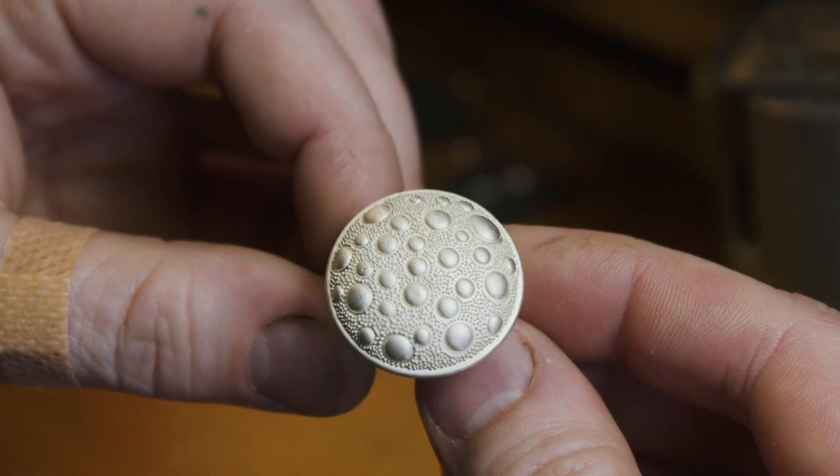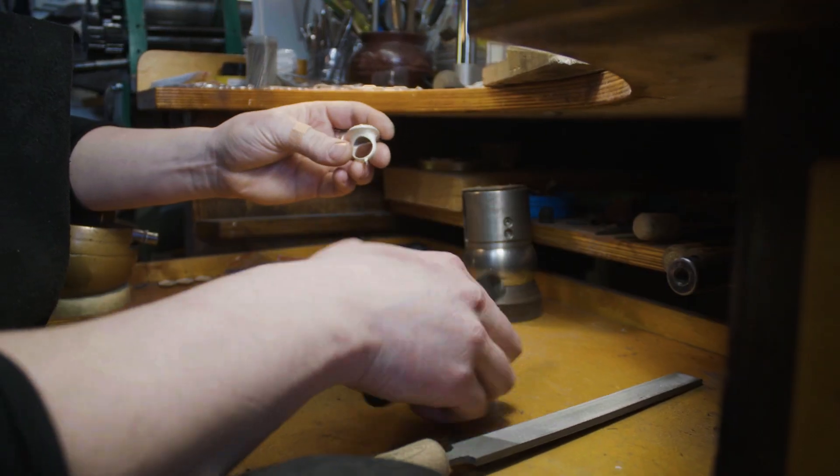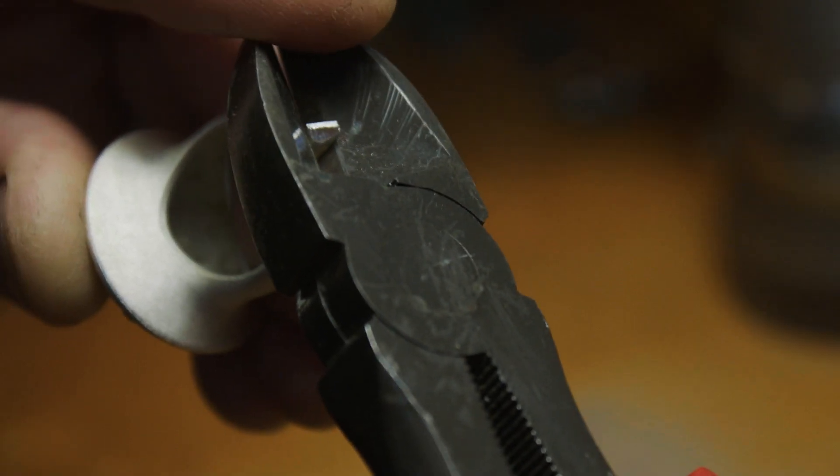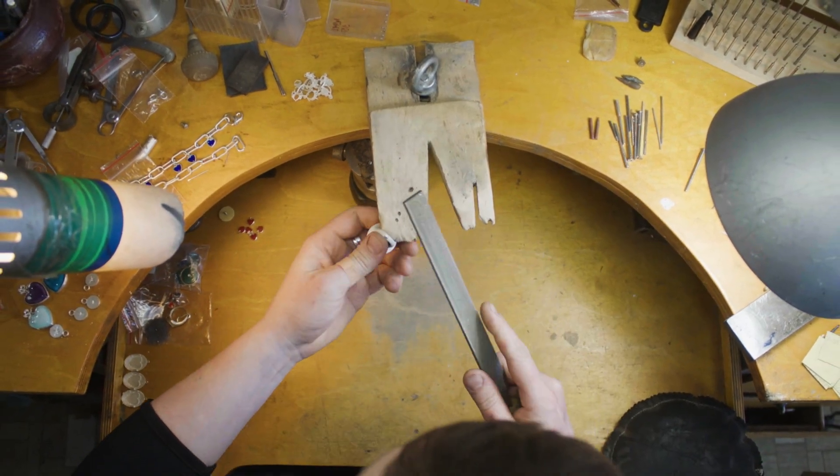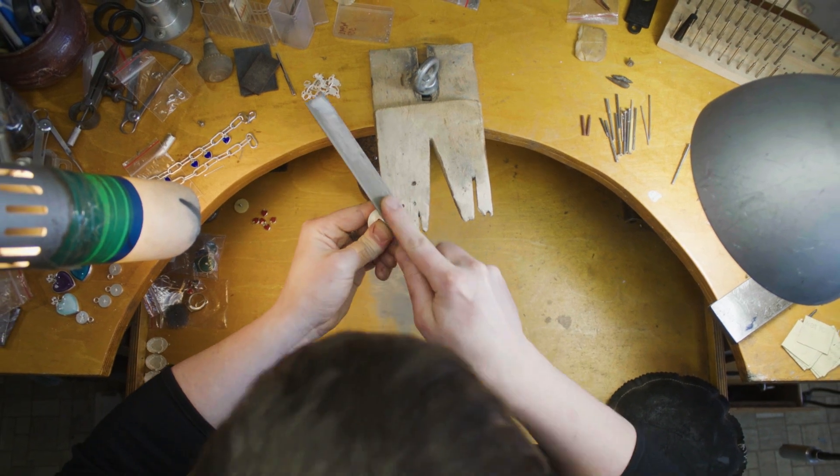And here is the silver ring in the hands of the jeweler. And then there is the final step in creating the ring. The jeweler carefully works on the ring, removing traces of the 3D printing and casting process.